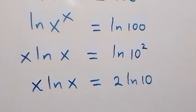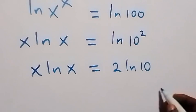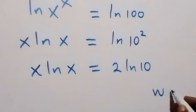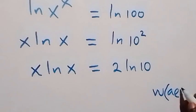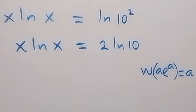Then from here, we apply the W-Lambert function. That is, when we have W of A times e raised to power A, this is the same as A. So this is the W function here.